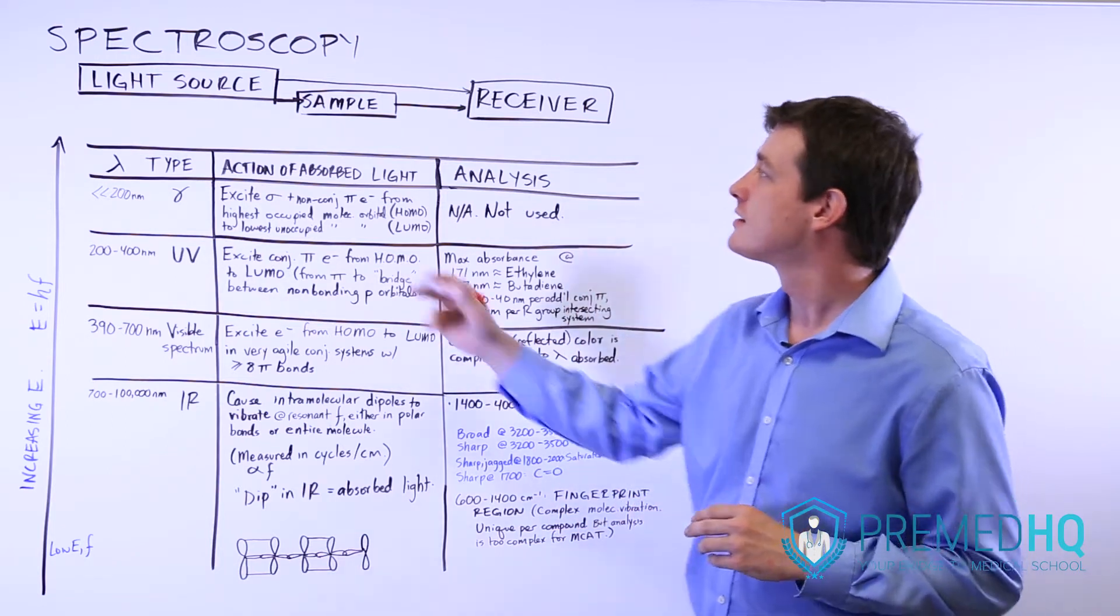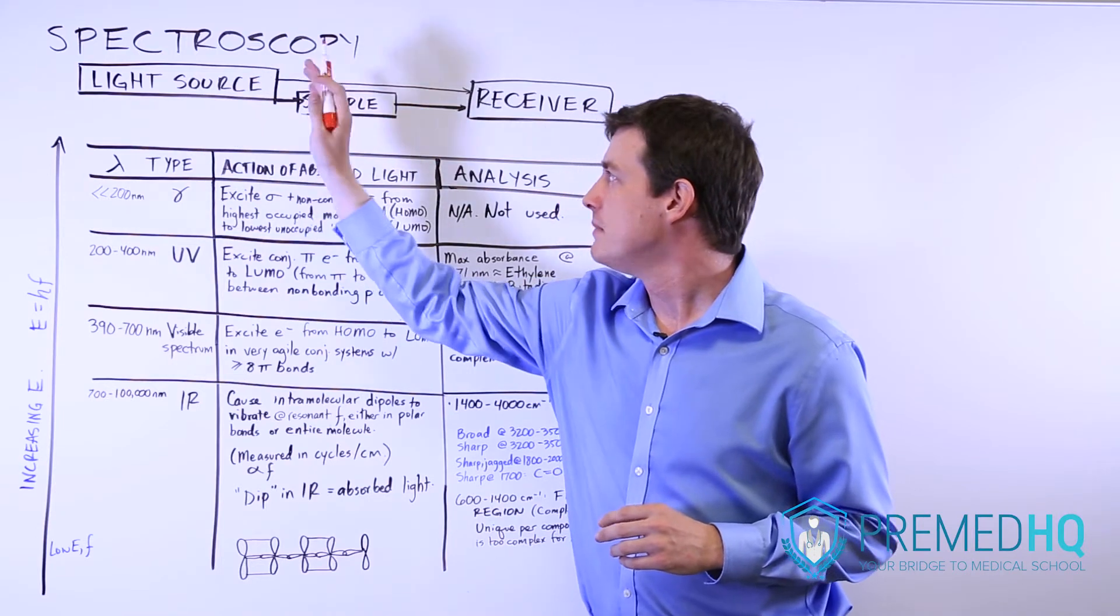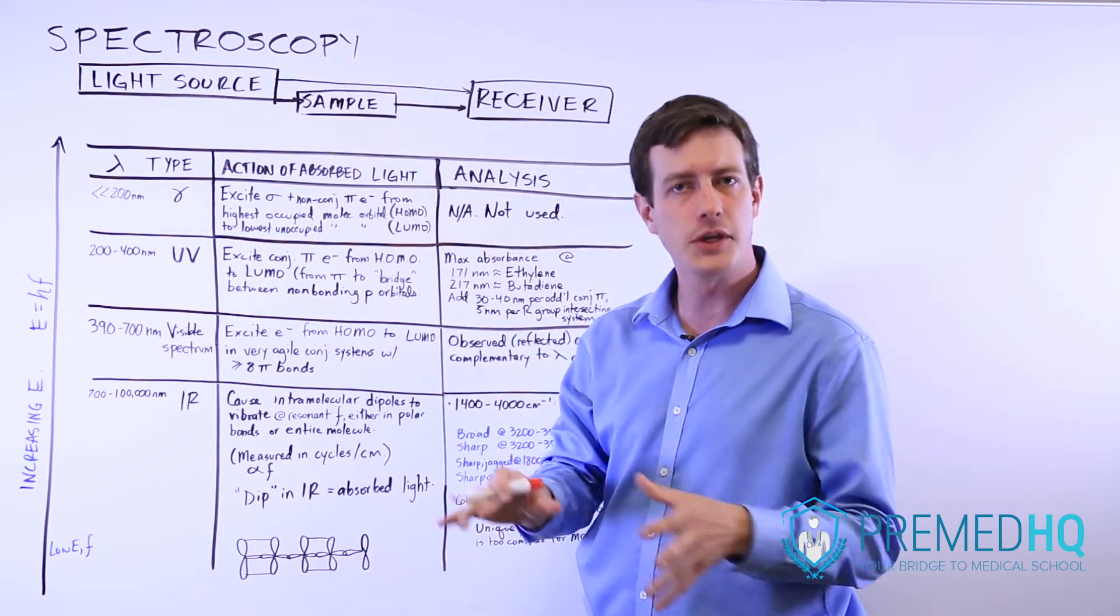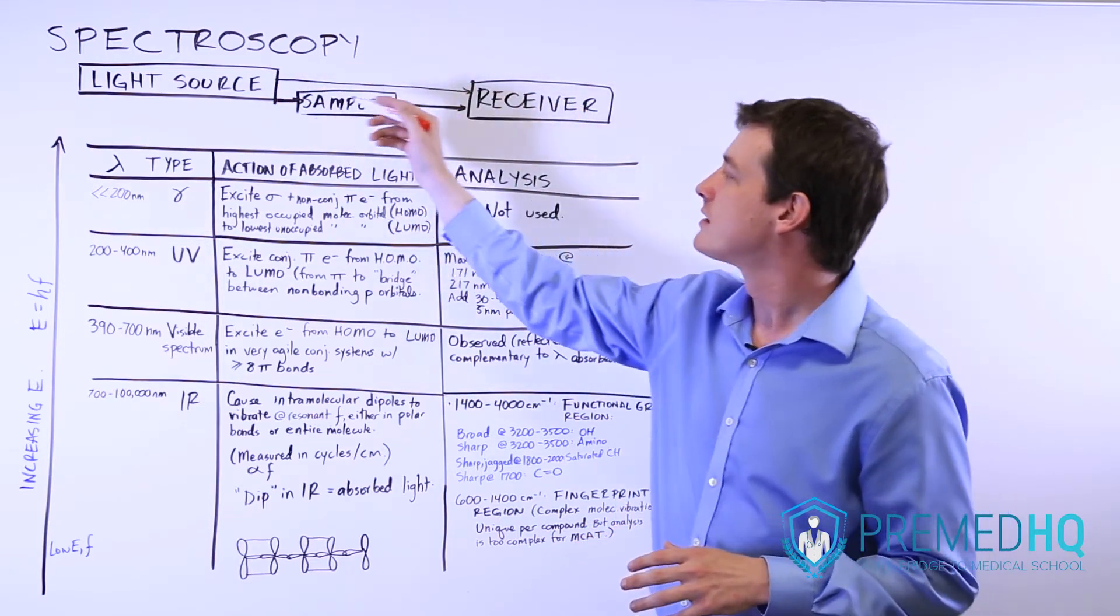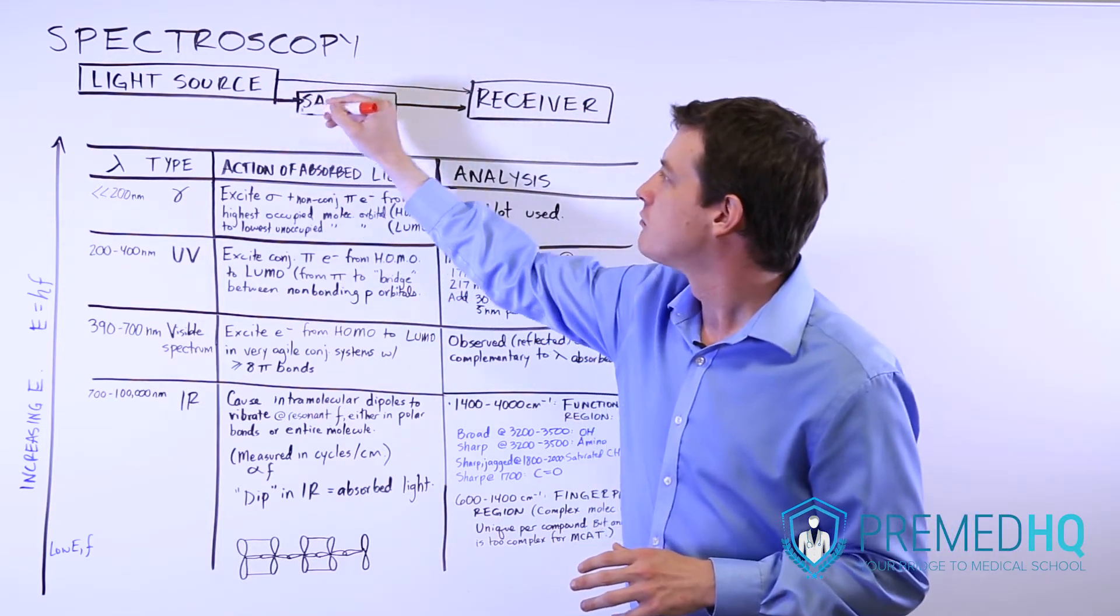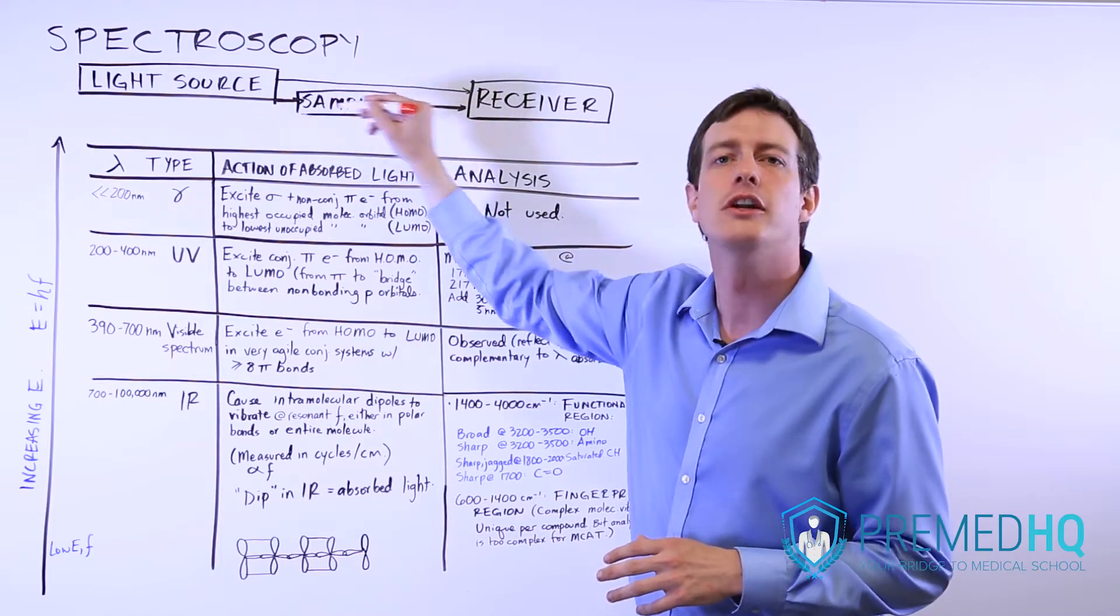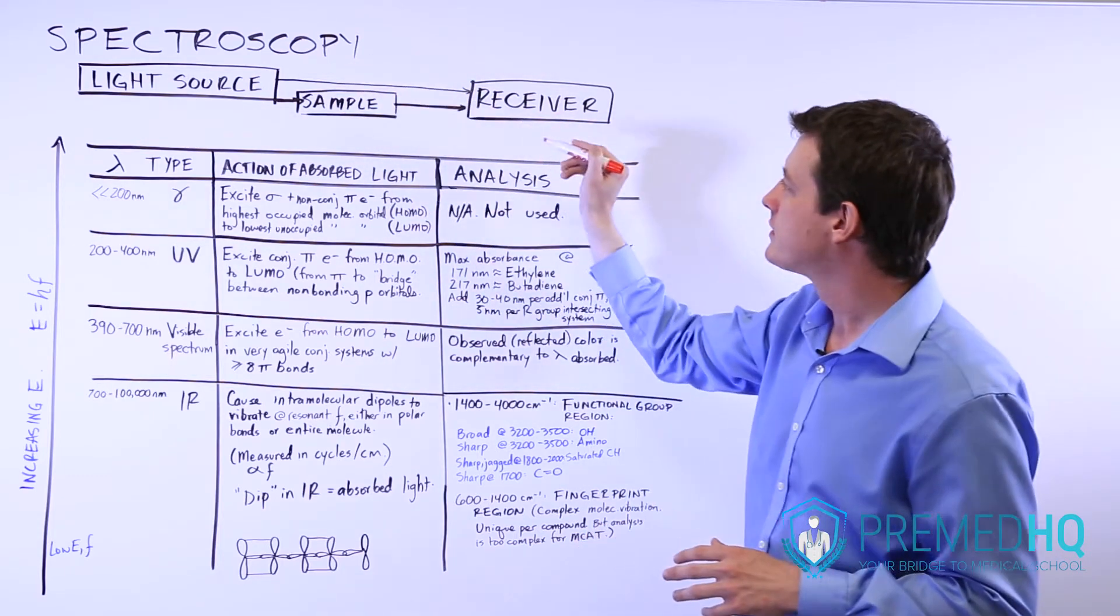The way that it works is you have a light source that's emitting light of a given frequency and wavelength. Some of the light goes directly to a receiver whereas some other light goes through your sample, through your unknown compound, and then hits the receiver.